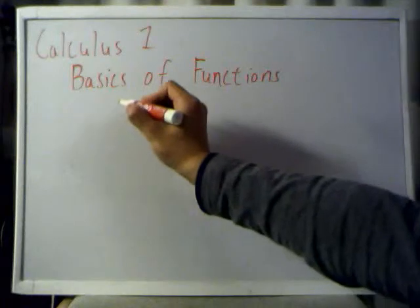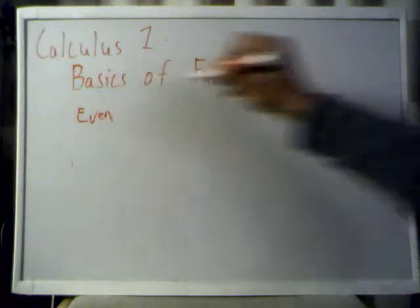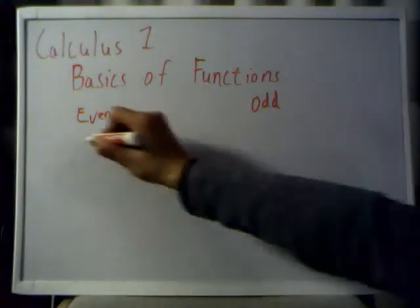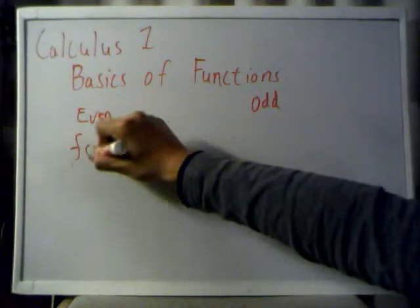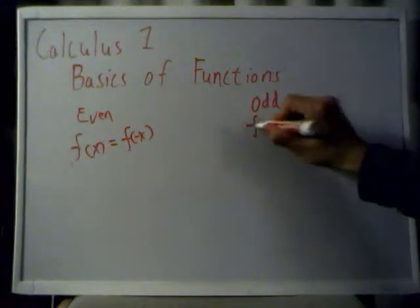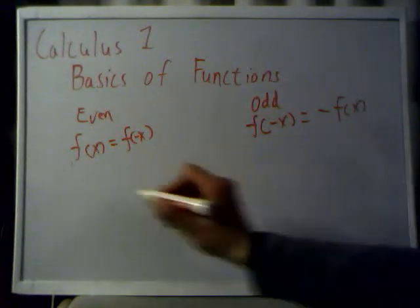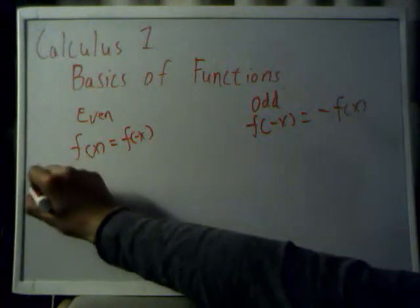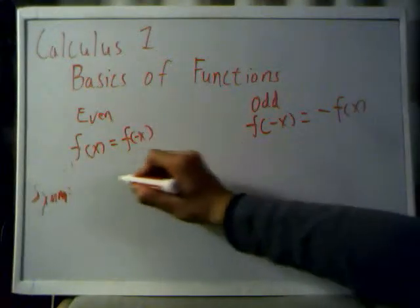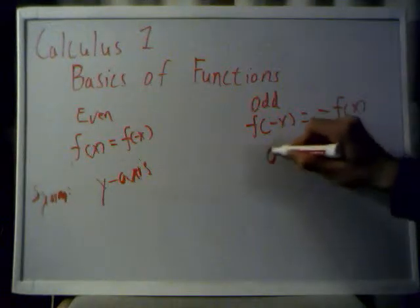For the symmetry of functions, I want to go over two classes of functions. You have even functions, and then you have odd functions. How do you differentiate between these? Well, for an even function, you have the case where f of x is equal to f of negative x. And for an odd function, you have f of negative x is equal to negative f of x.